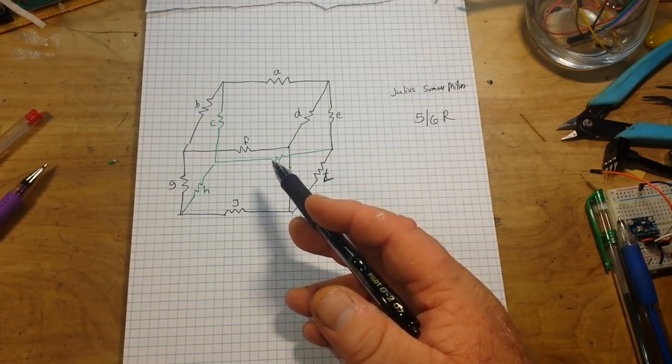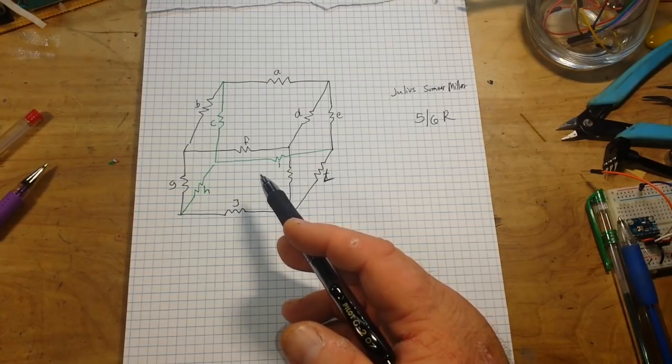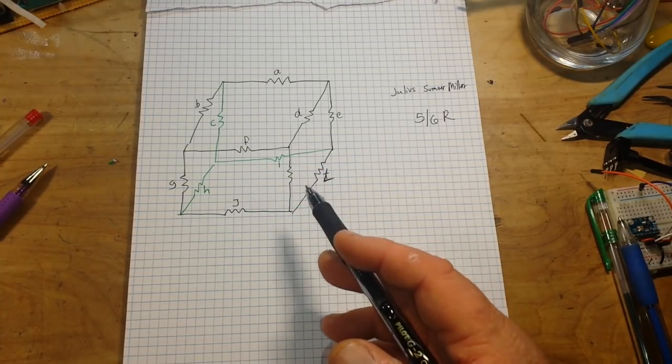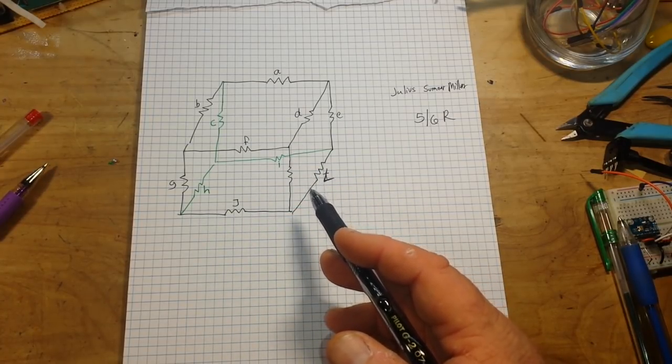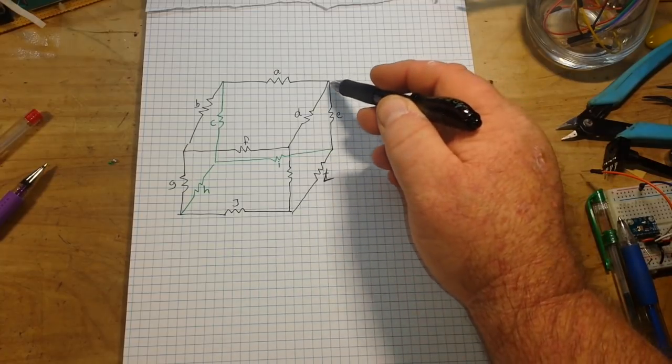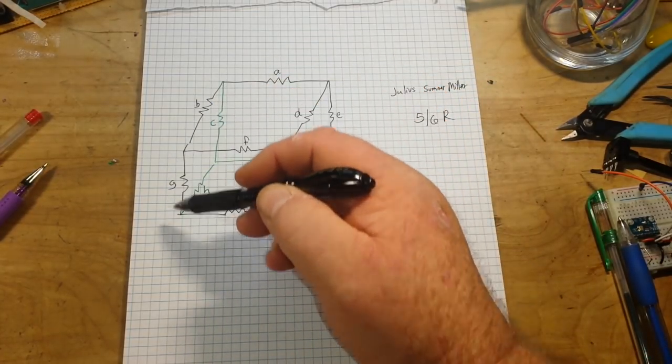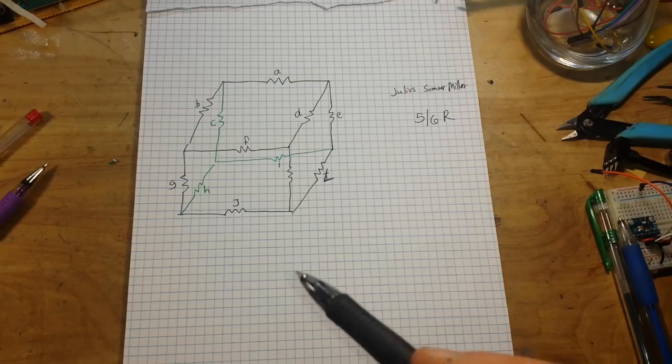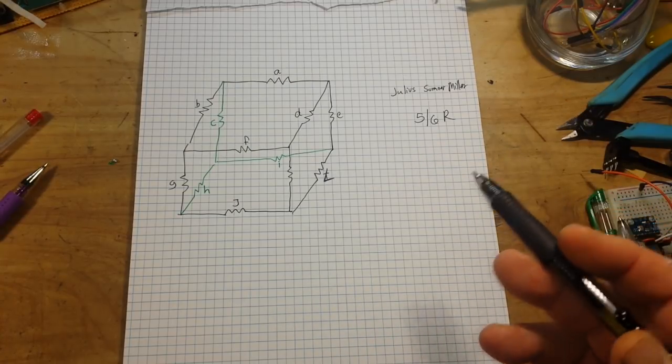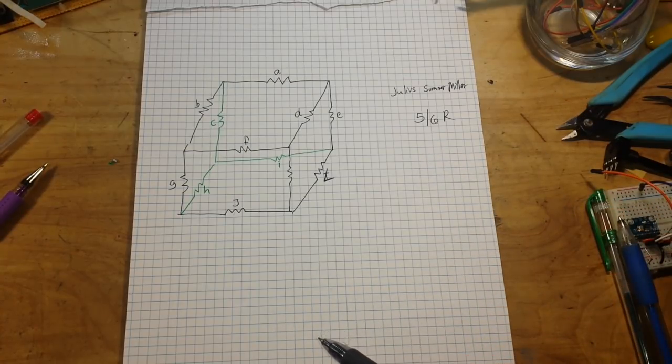Consider the following, as Professor Miller would say. The cube is a structure consisting of 12 resistors. They're electrically connected between eight vertices. Let's say they're one ohm, but any value can be used.